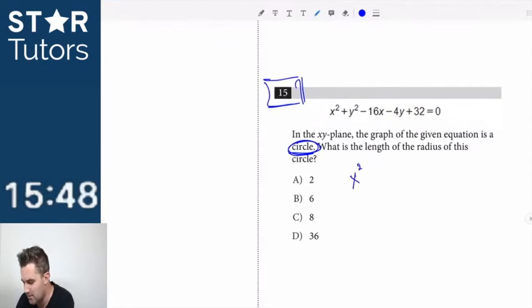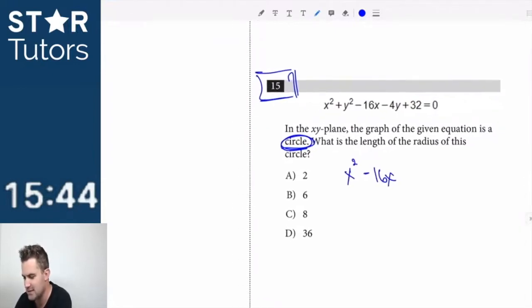We're just going to complete this by completing the square, so x squared minus 16x, get your terms together. x squared minus 16x.